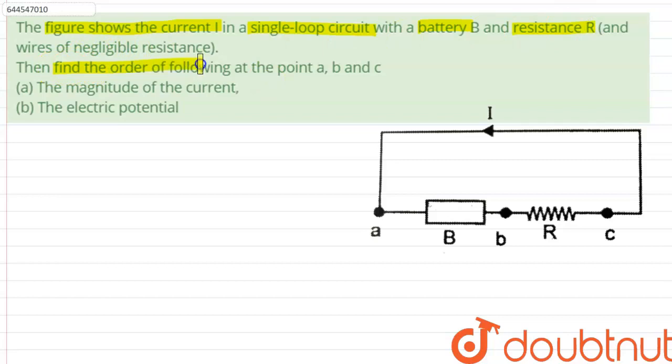Then find the order of following at the point A, B and C: the magnitude of the current and the electric potential.